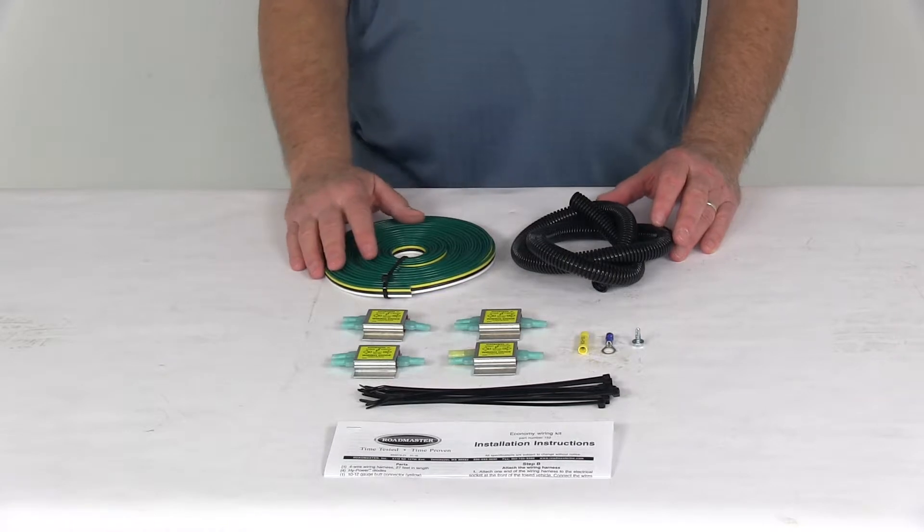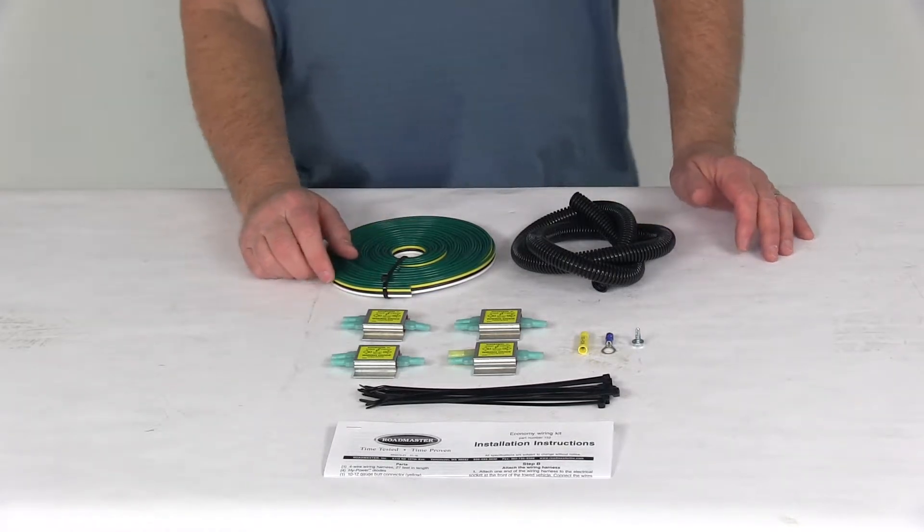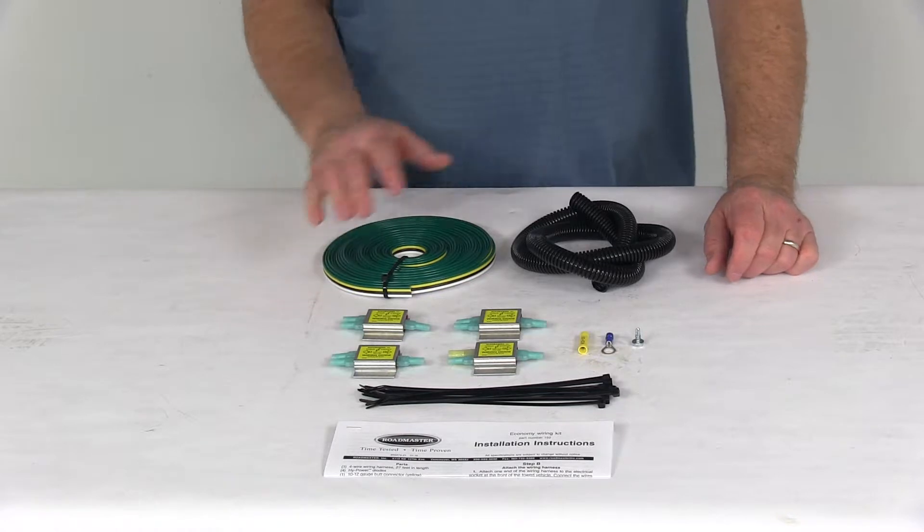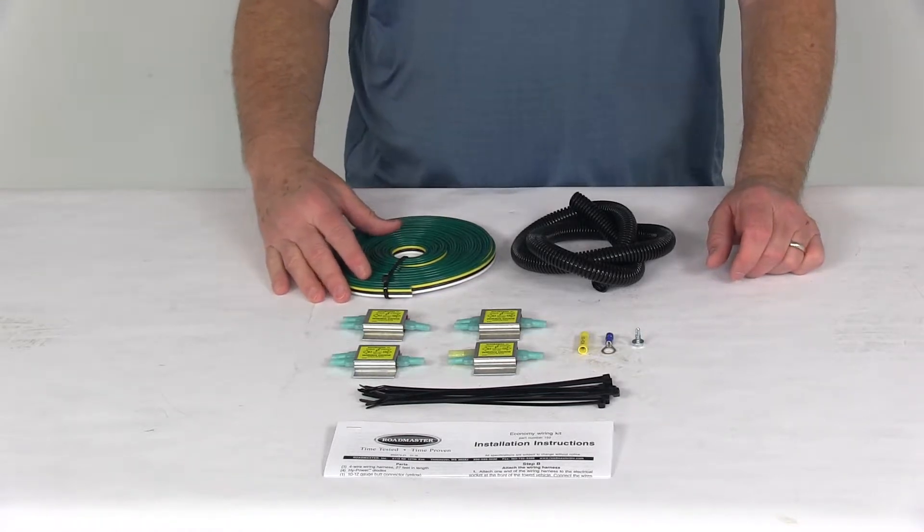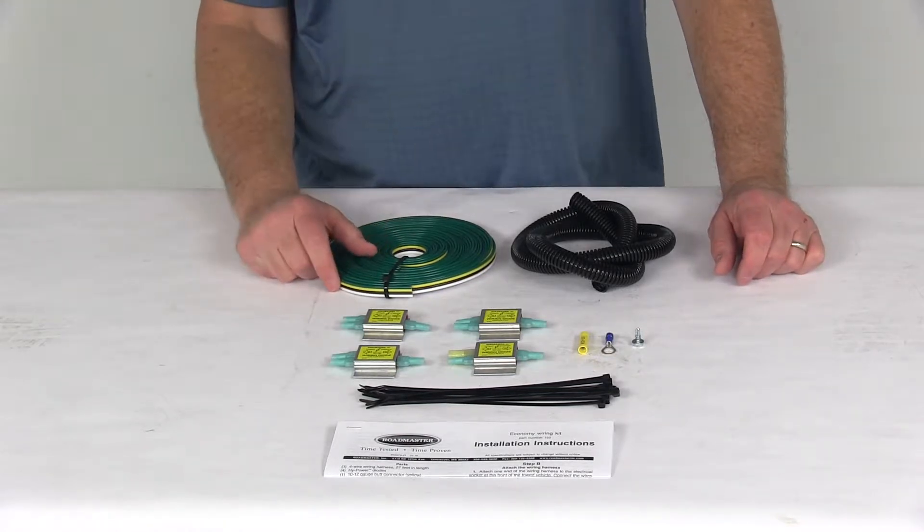This will wire the towed car as combined systems so that the brake and turn signals will travel along the same wire. This will also prevent electrical feedback and the damage that it can cause to your vehicle's electrical components.